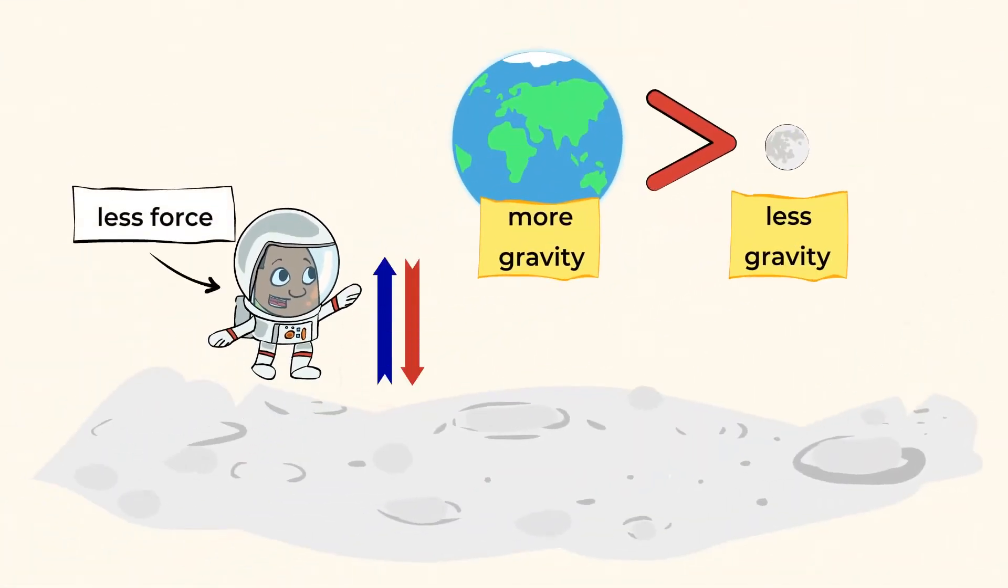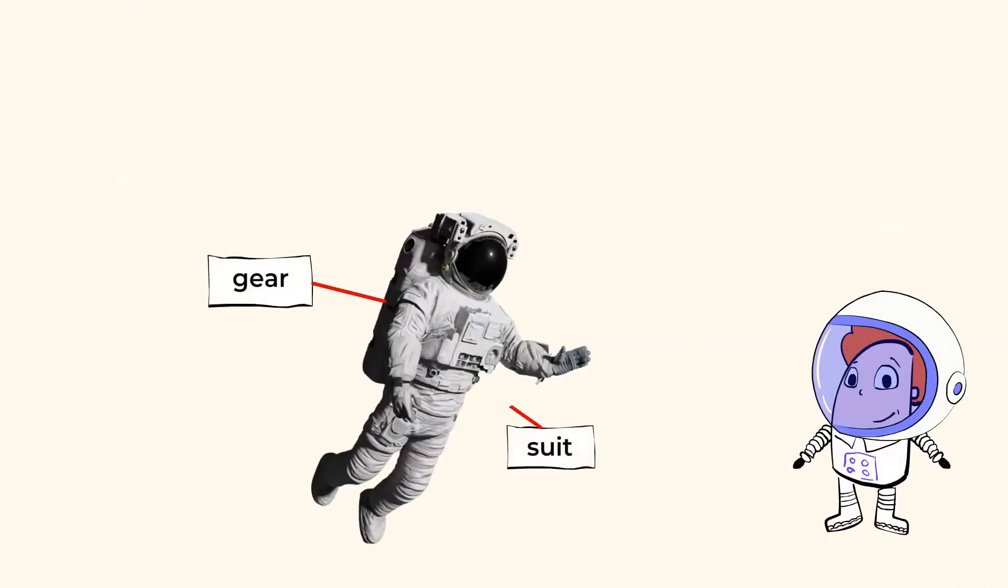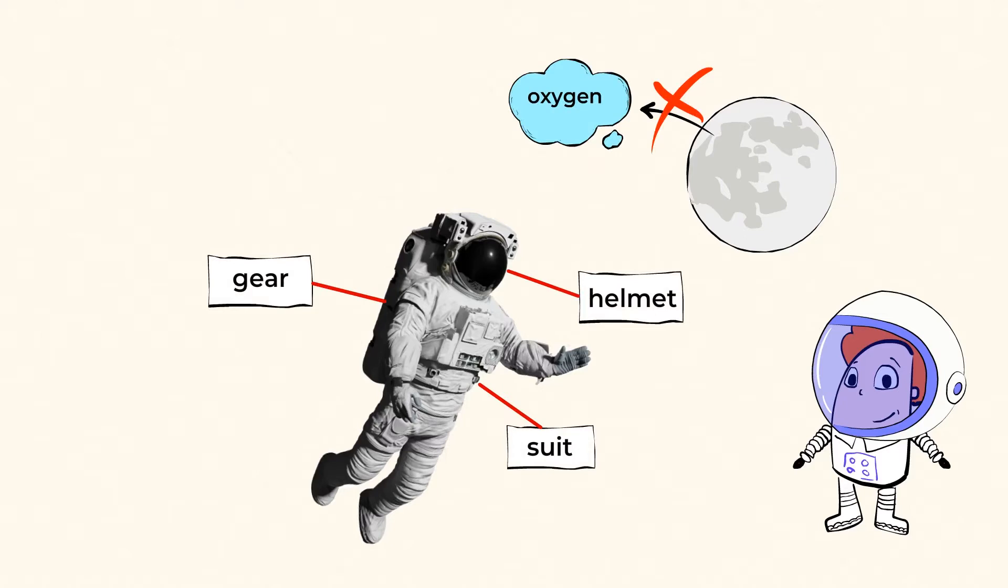Check out his gear, his cool suit, and helmet. They are very important, because on the moon, there is no oxygen for breathing. So this suit supplies the astronaut with air to breathe.